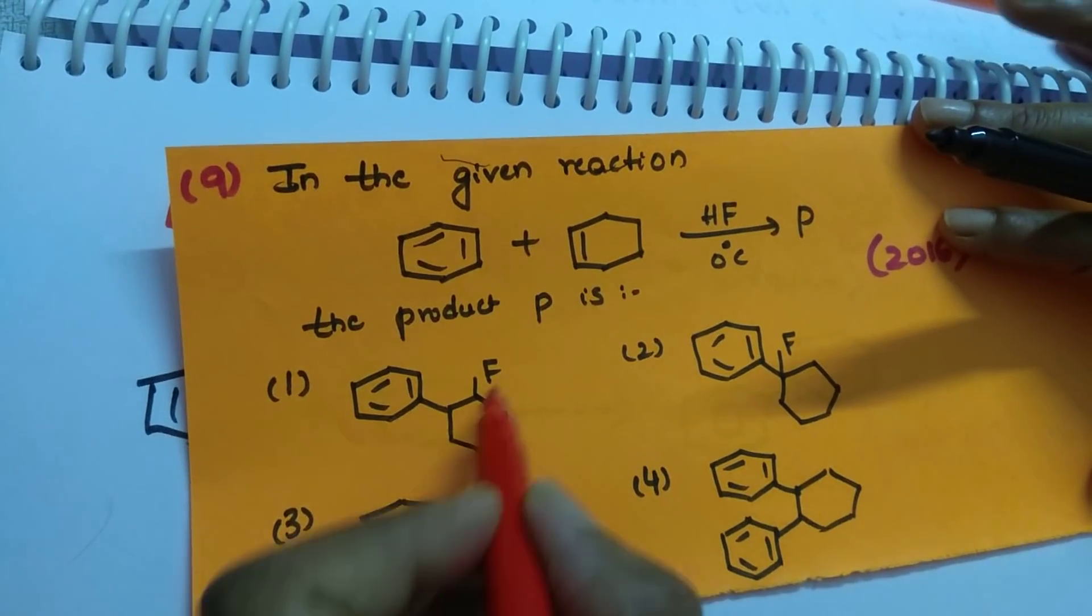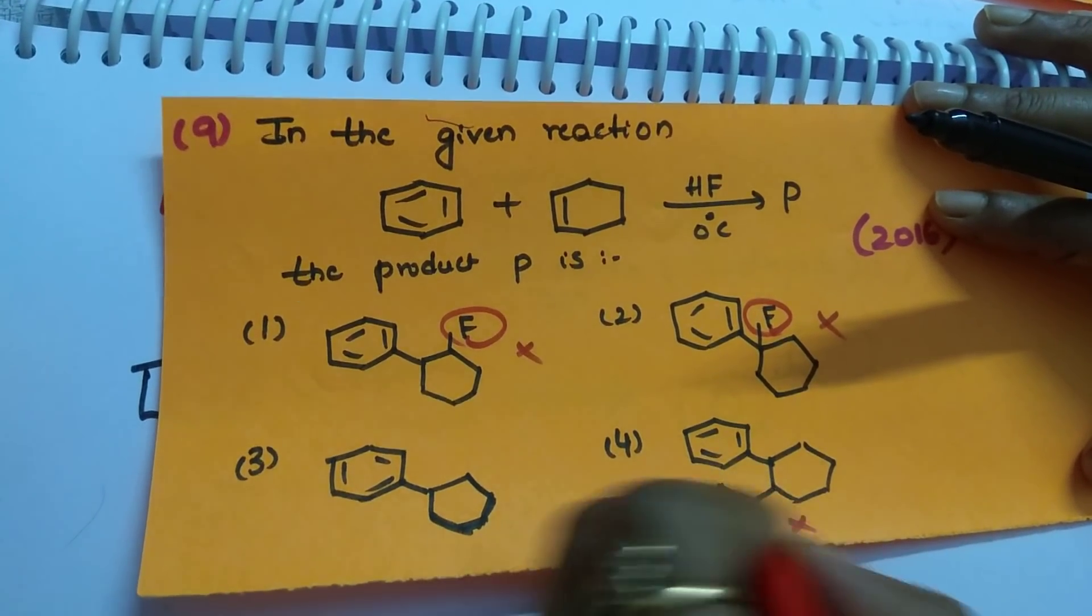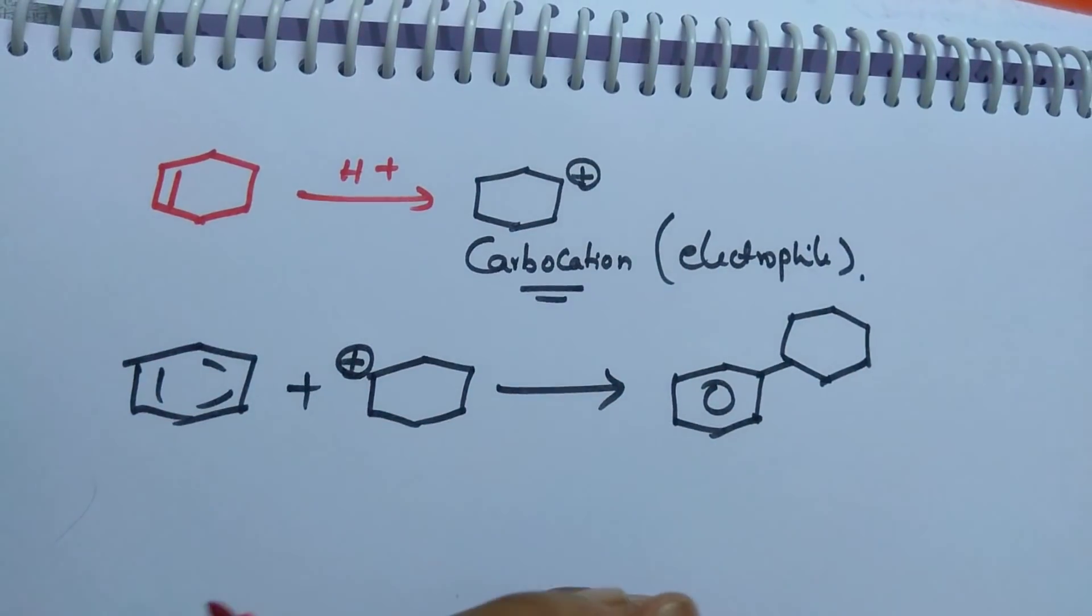Then, it results in the formation of a benzene ring with a cyclohexyl group. So, which of the following is the correct answer? Benzene with cyclohexyl. Here, fluorine is there. No. Here, also fluorine is there. No. Here, two benzene rings are there. No. So, this is the correct option.